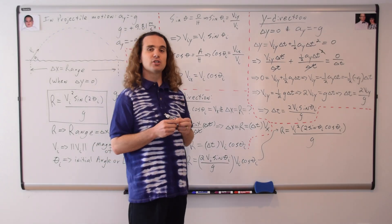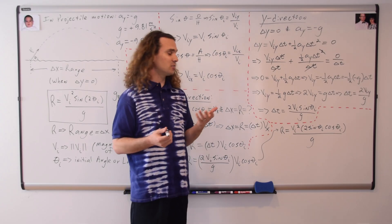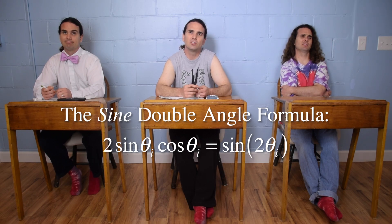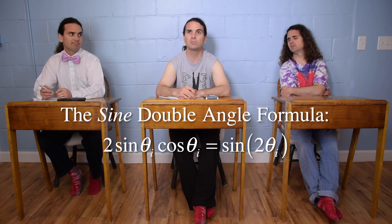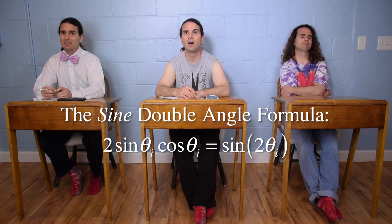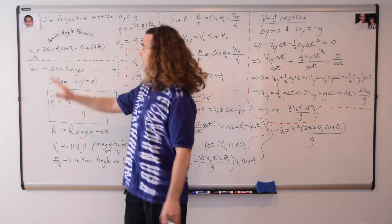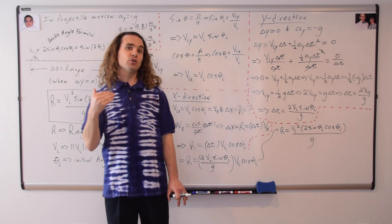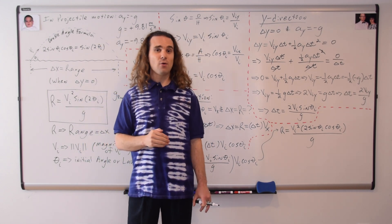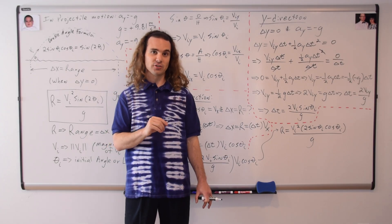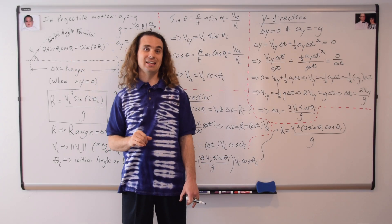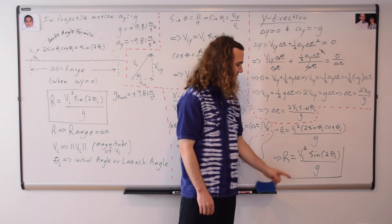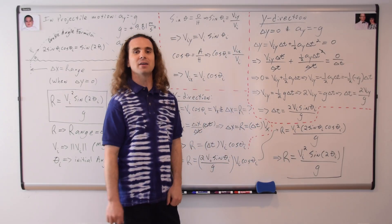In this class, generally, we don't require that you remember or even have learned the double angle formula or other trig functions like it. The double angle formula states: two times the sine of theta times the cosine of theta equals the sine of two times theta. You do not need to know the double angle formula in order to use the range equation. We do need it, however, in order to do this very last step in deriving the range equation. We are going to substitute in the sine of two times theta initial, giving us: the range of a projectile equals the magnitude of the initial velocity squared times the sine of two times the launch angle, divided by the acceleration due to gravity.